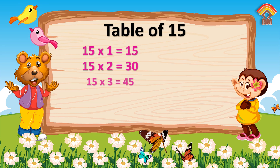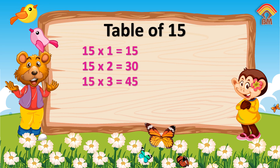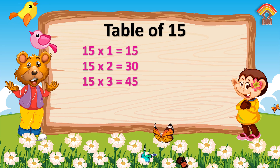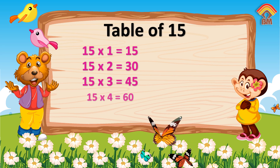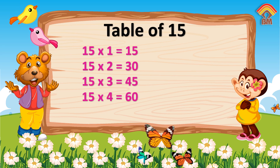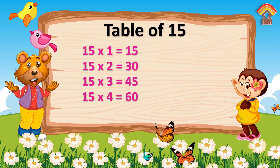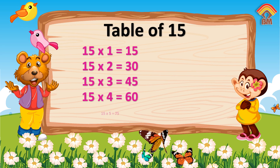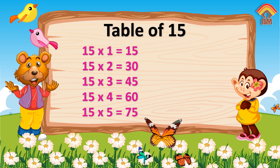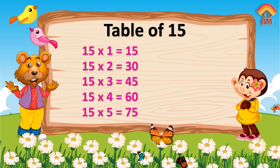Fifteen 3s are forty-five. Fifteen 4s are sixty. Fifteen 5s are seventy-five.